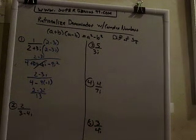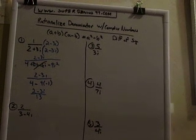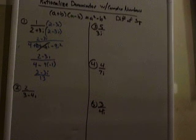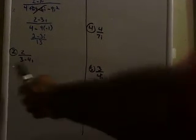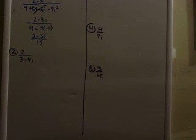So all I'm doing there, using my principles of the difference of two squares. Let's look at the next one. So same thing, I have a 3 minus 4i in the bottom, so I'm going to multiply by something. It's going to cause that to go away, so I'm going to multiply by 3 plus 4i.